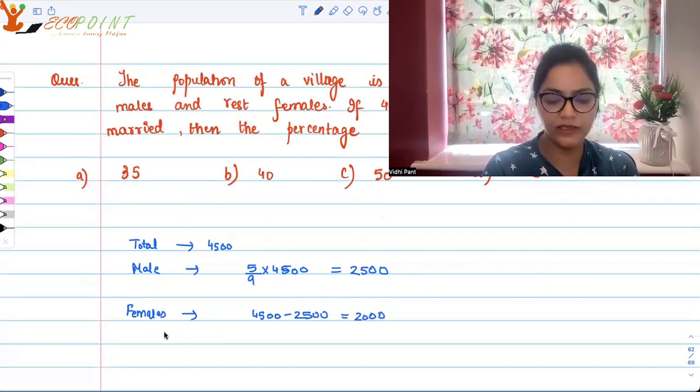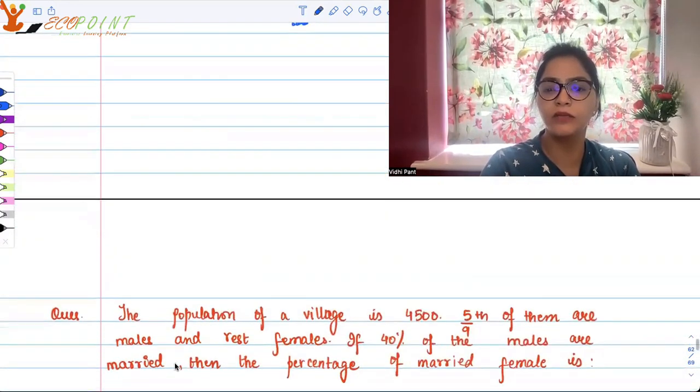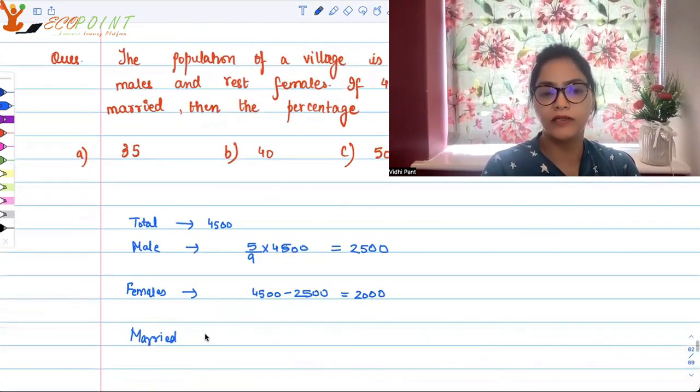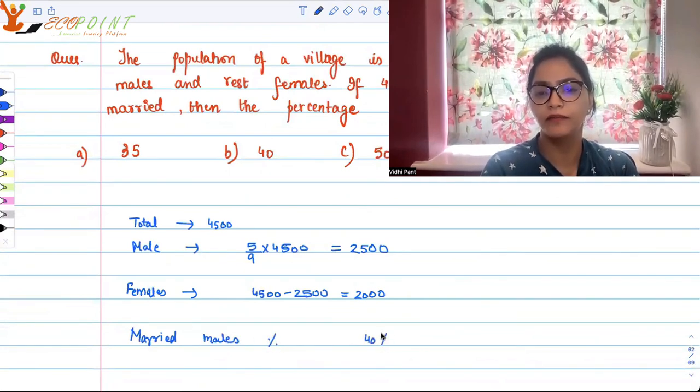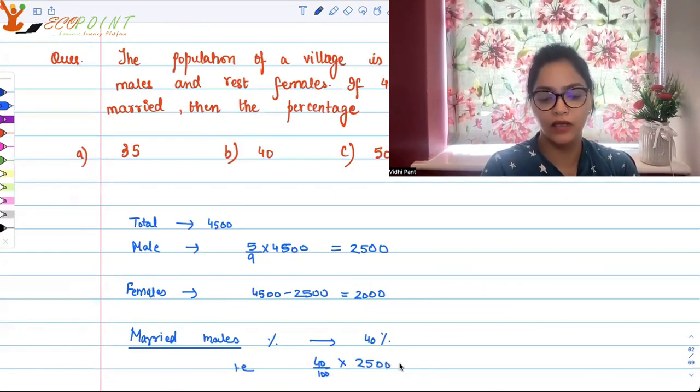Now for married males, the information is 40 percent of the males are married. So married males: 40/100 × 2500, which means we have 1000 married males.